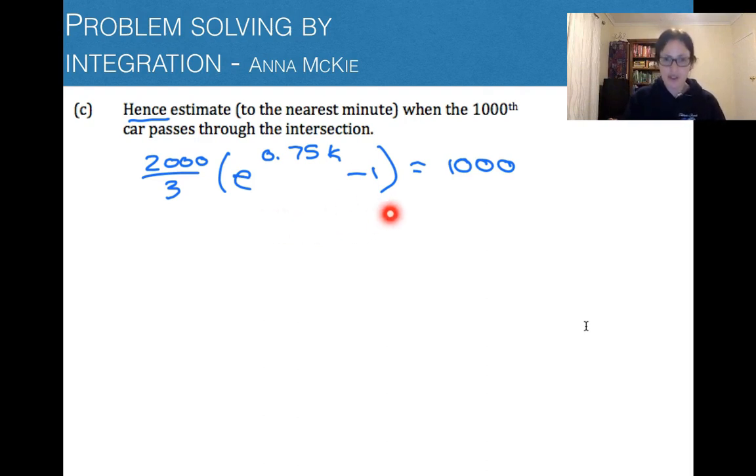2000/3(e^0.75k - 1) is equal to 1,000. So that's when the integral here is equal to 1,000 cars. And we need to solve for k. So this is good practice on solving exponentials. So rearranging, we'll times through by three and divide by 2,000. So we'd end up with e^0.75t. Well, I'm going to go back to t because we're in terms of minutes here. Is equal to 3,000 on 2,000, which is 3 on 2.